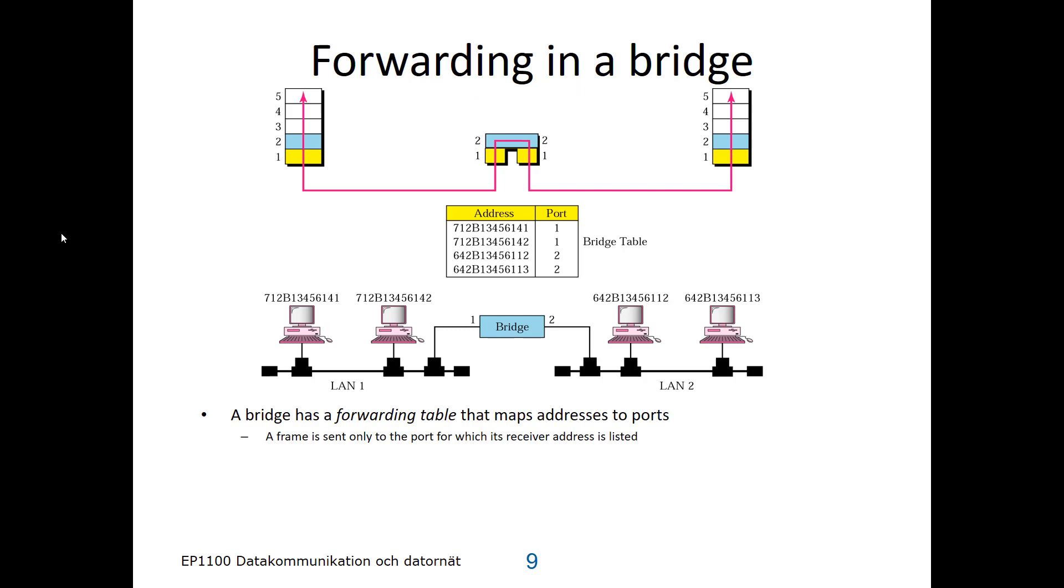The table looks as illustrated here. You have MAC addresses, and then it says which port that MAC address is on. If a frame comes in on port 1, and the destination address is also on port 1, then the bridge will not forward it on port 2.